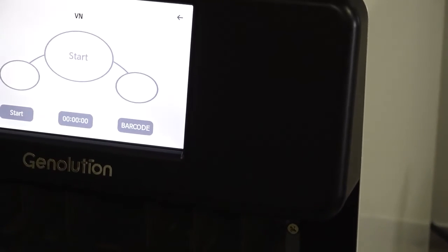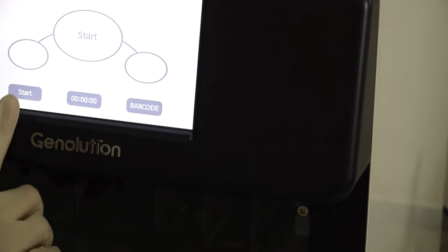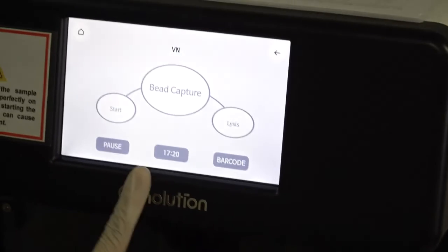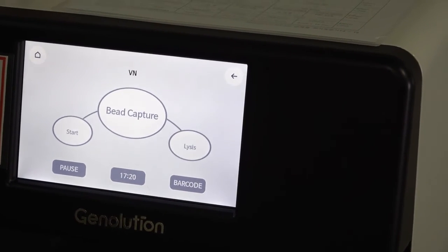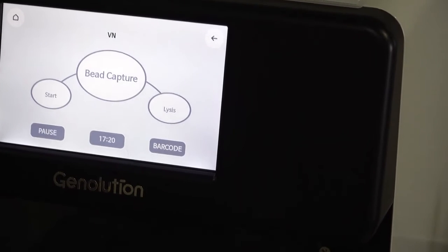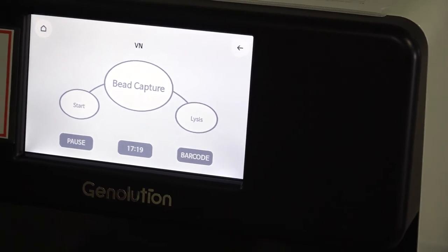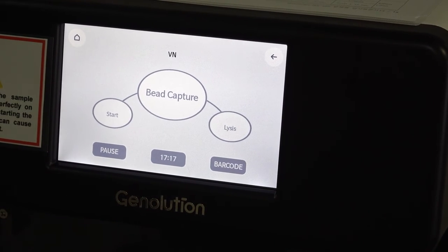You click SET and the instrument will start. Now, this instrument will take approximately 17 minutes to complete the entire procedure from loading the sample to extraction. And then we click on start and the procedure will basically cycle through with the machine.